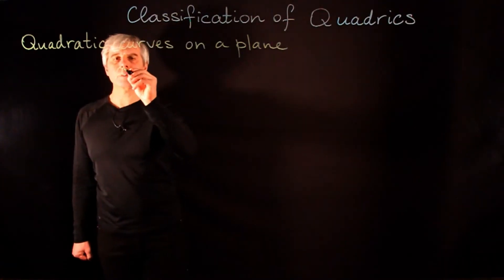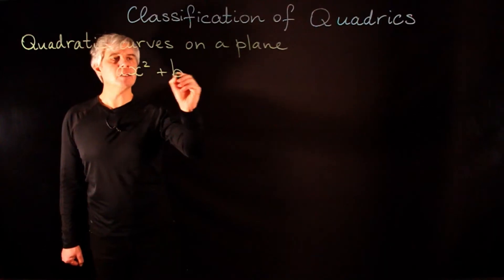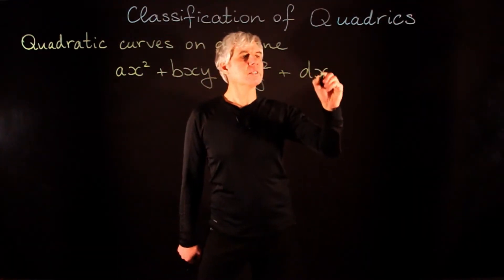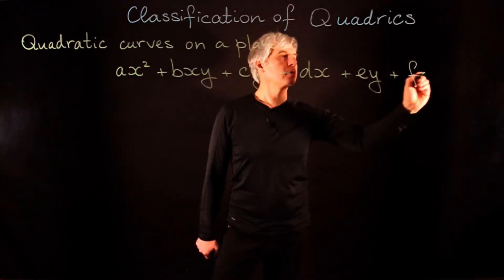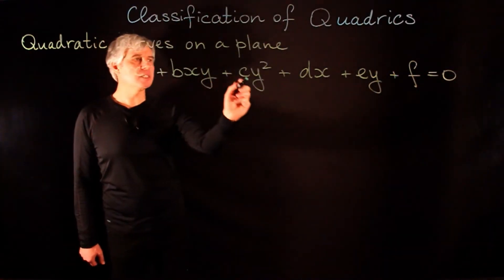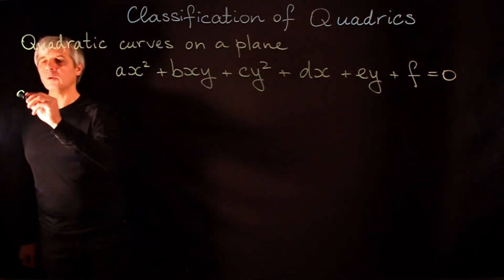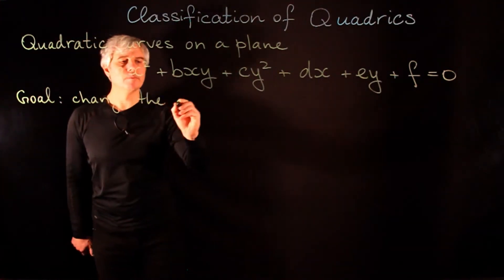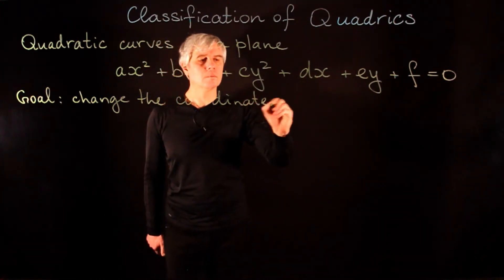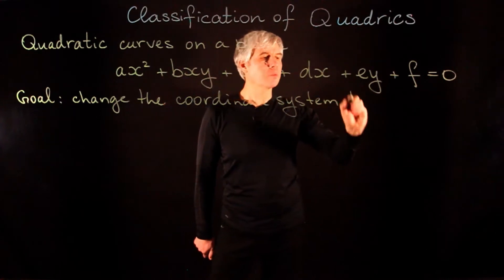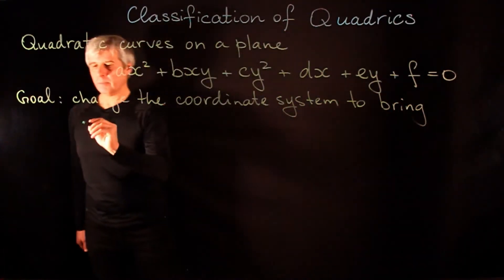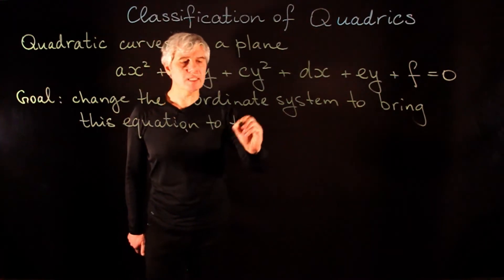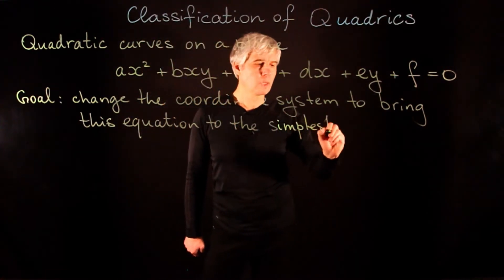The general equation we will consider is ax squared plus bxy plus cy squared plus dx plus ey plus f equals zero, where a, b, c, d, e, and f are real numbers. Our goal is to change the coordinate system to bring this equation to the simplest possible form.